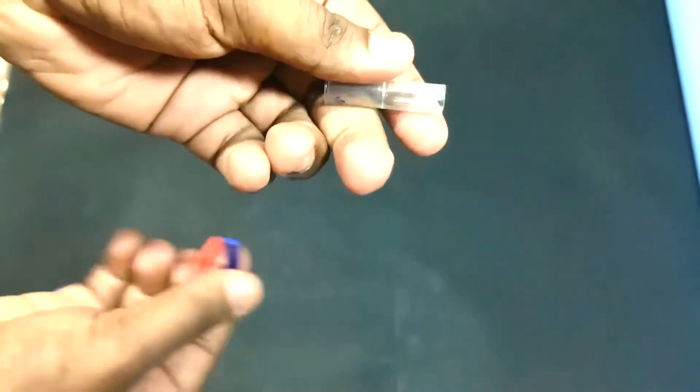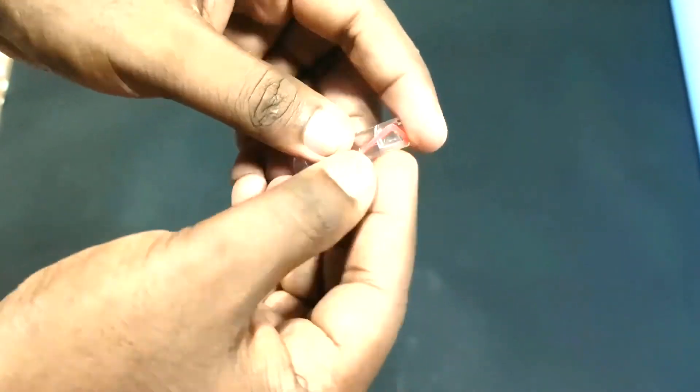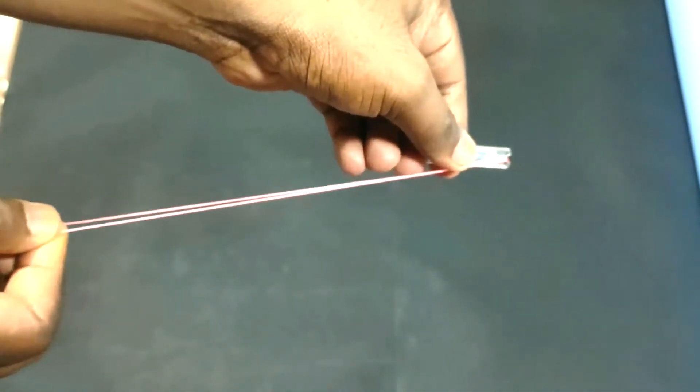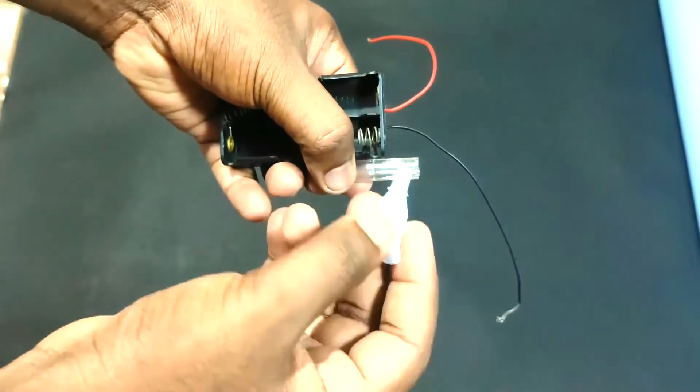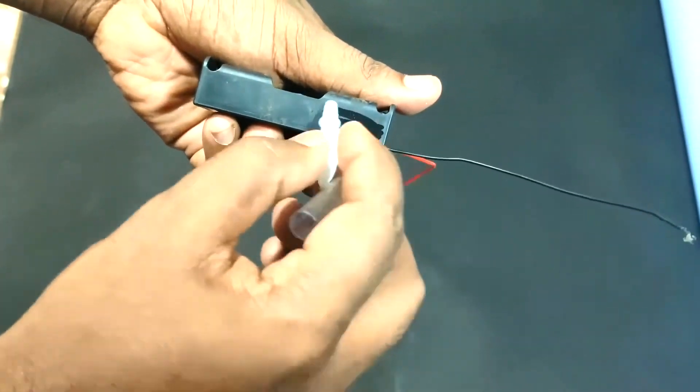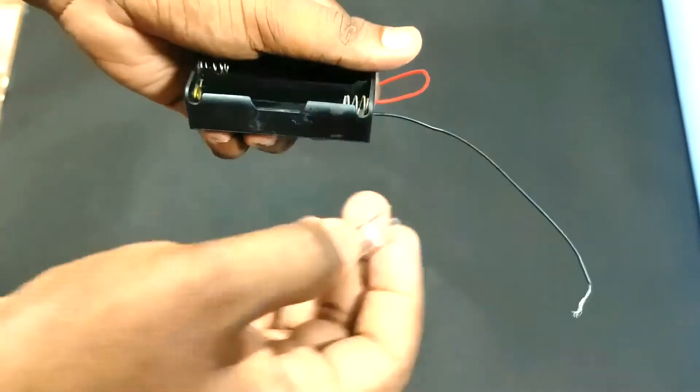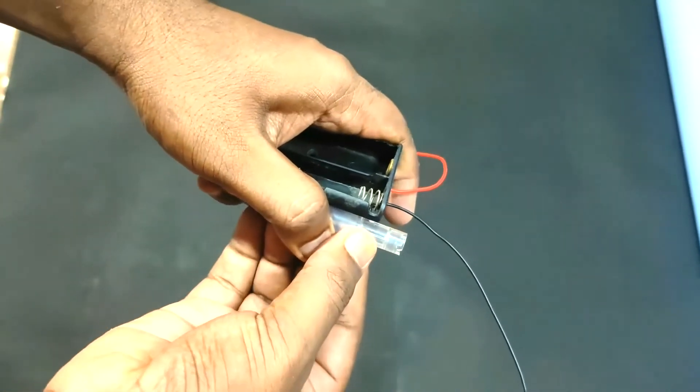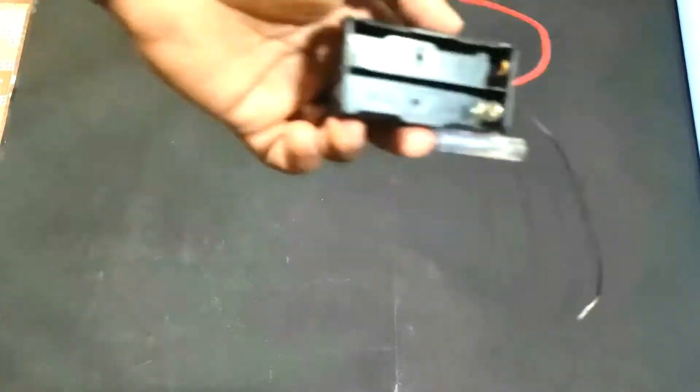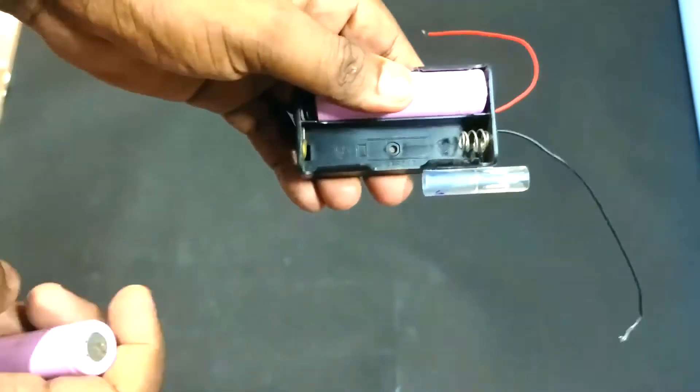Take a pen cap like this. Now attach the pen cap to battery holder. Insert batteries and tape them.